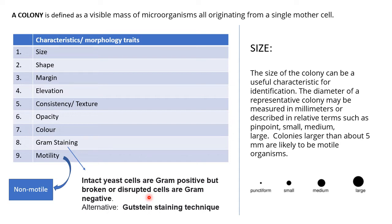An alternative staining technique is Augustine's staining technique, or you can do a simple monochrome staining using only one stain — crystal violet or safranin — to do your microscopic observation. So that was about motility and gram staining. Now about size, the first characteristic or morphology trait.